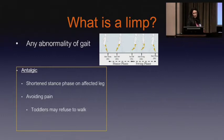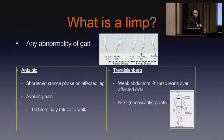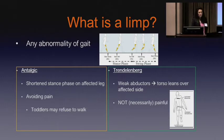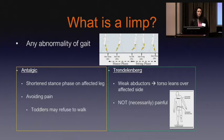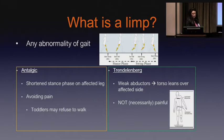With kids, especially young kids, they might just refuse to walk because they don't want to feel pain. And then the other version of a limp is a Trendelenburg gait. That's really due to weak abductors. So if the abductors are weak, as you walk to keep your center of gravity so you don't fall to the opposite side, you lean the body over, and that's more of like a lurching kind of gait. And it's not always painful.